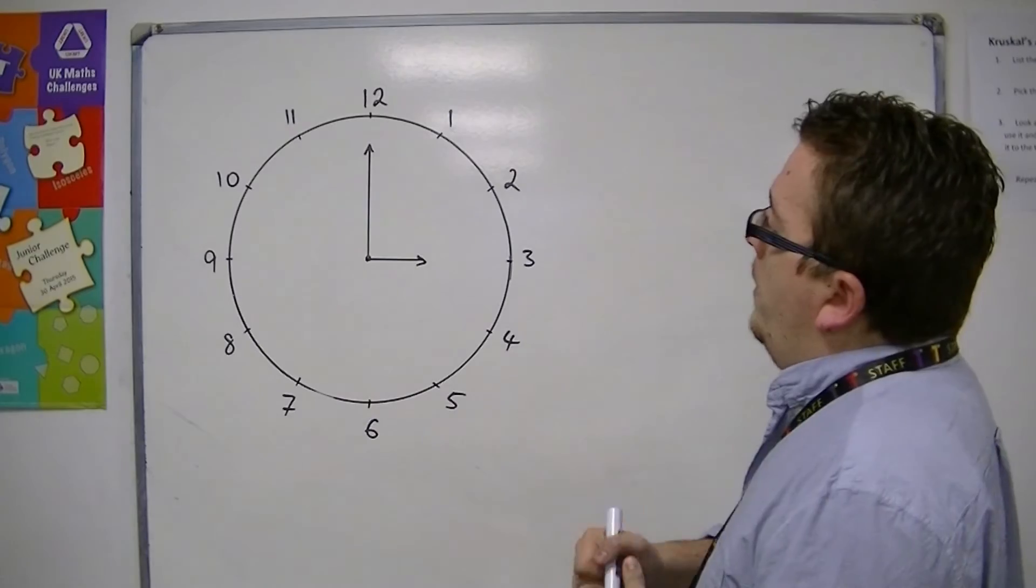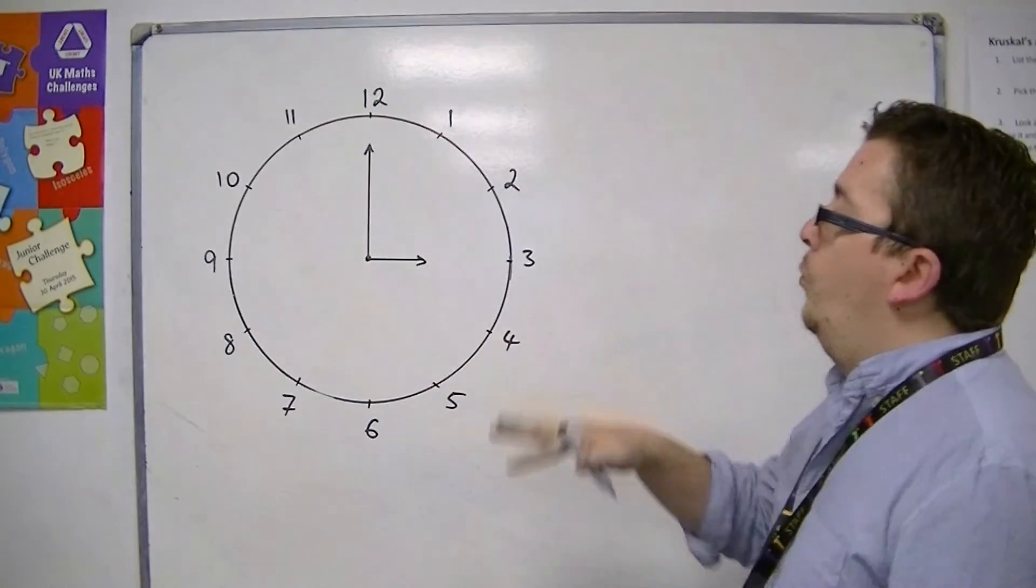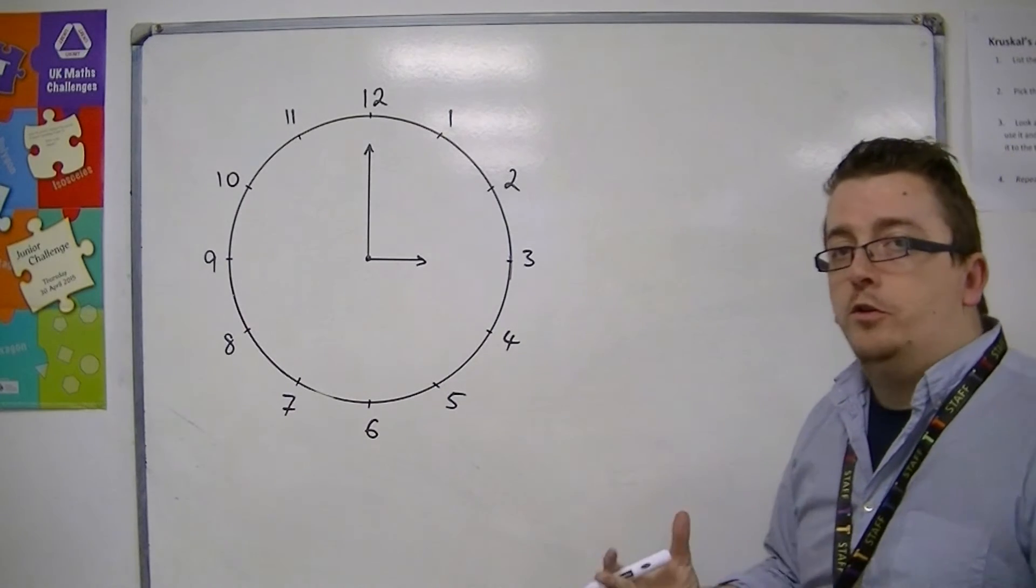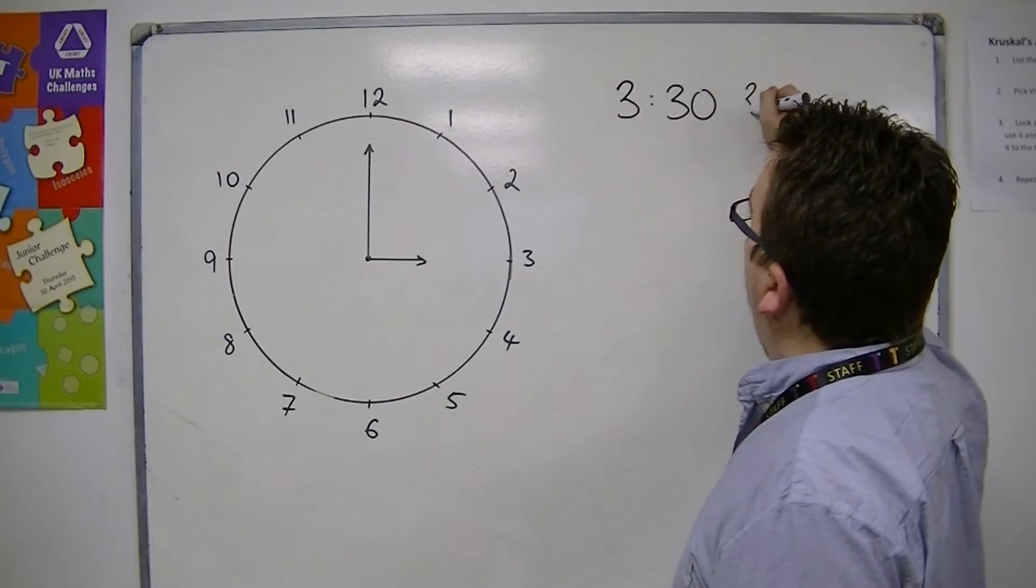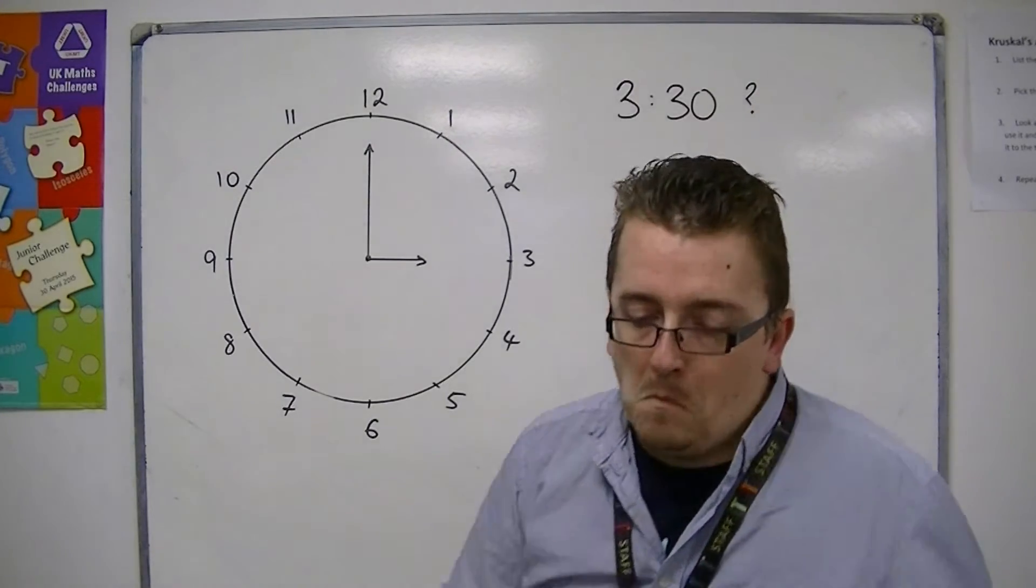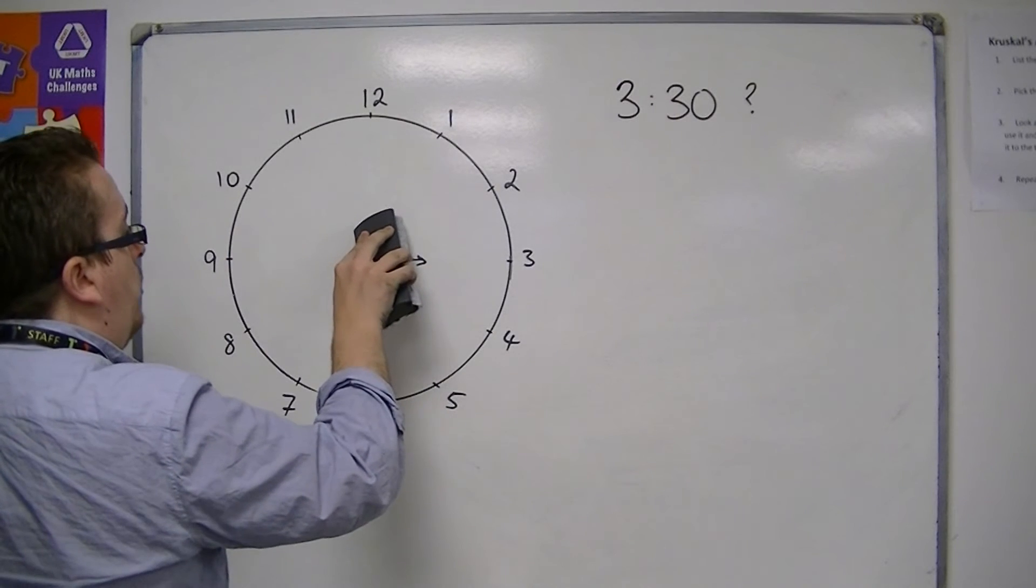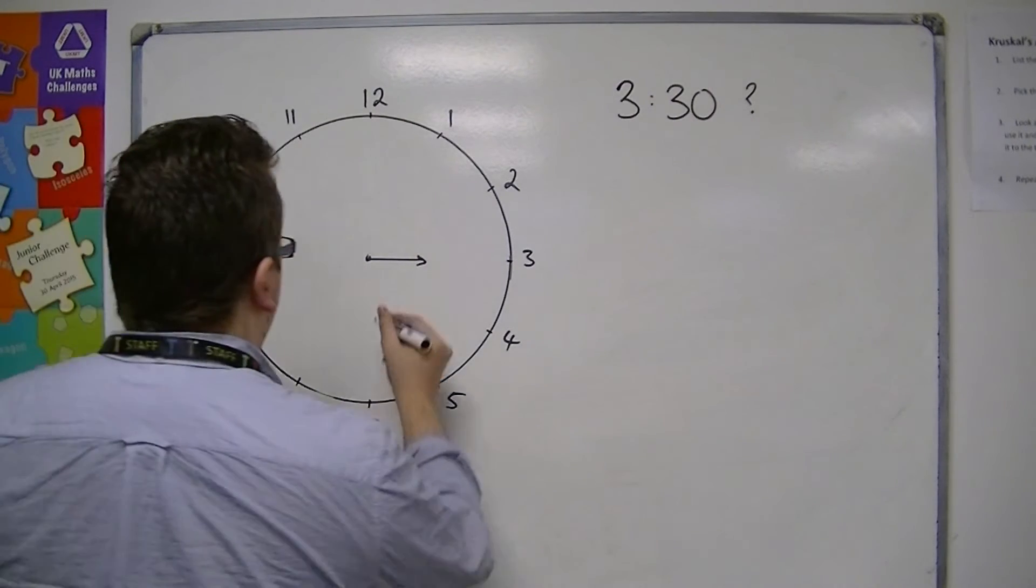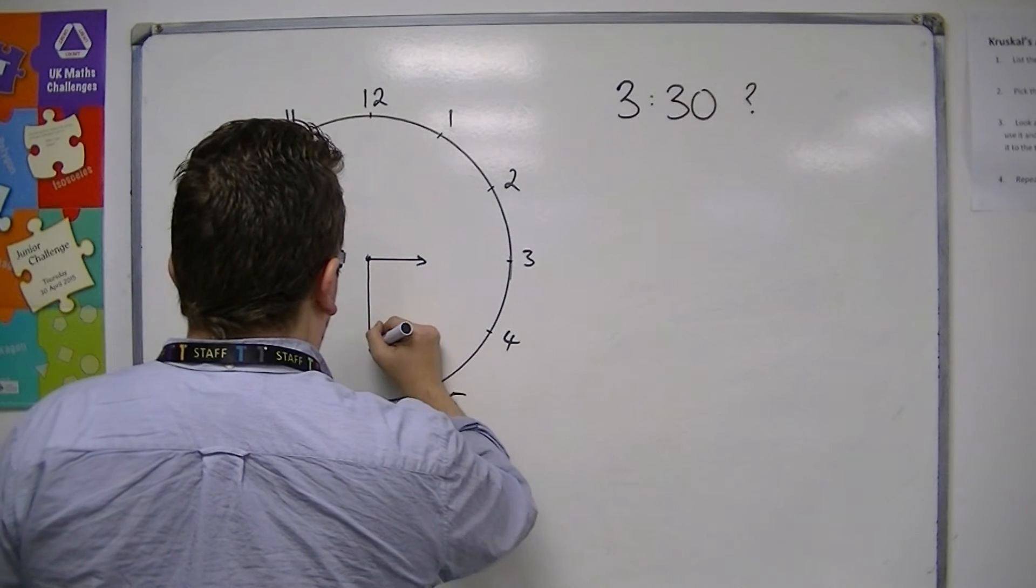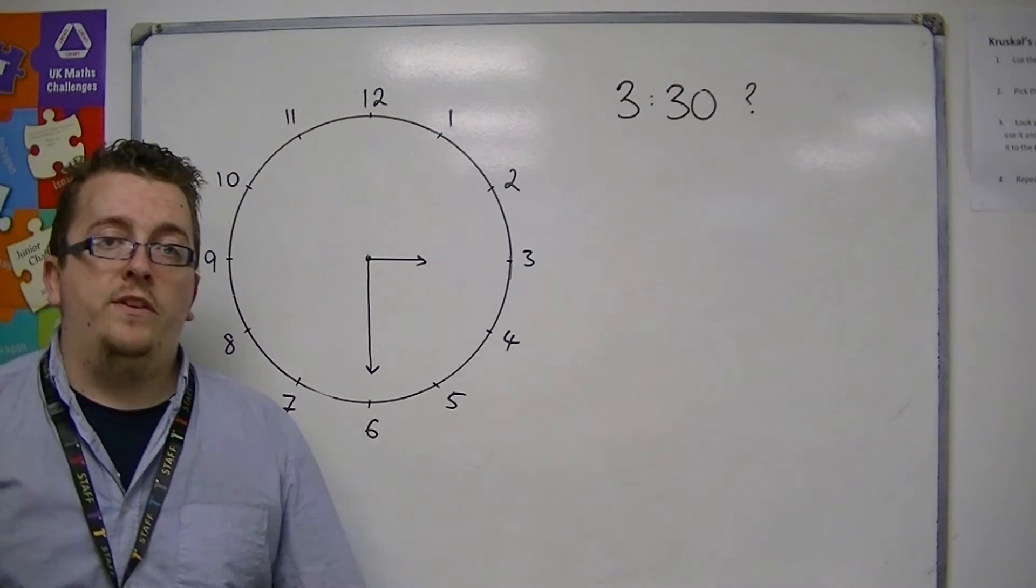So, what if I needed to write down or show what the face of the clock would look like when it is 3.30? Now, in the majority of cases, this is what a student would usually draw.